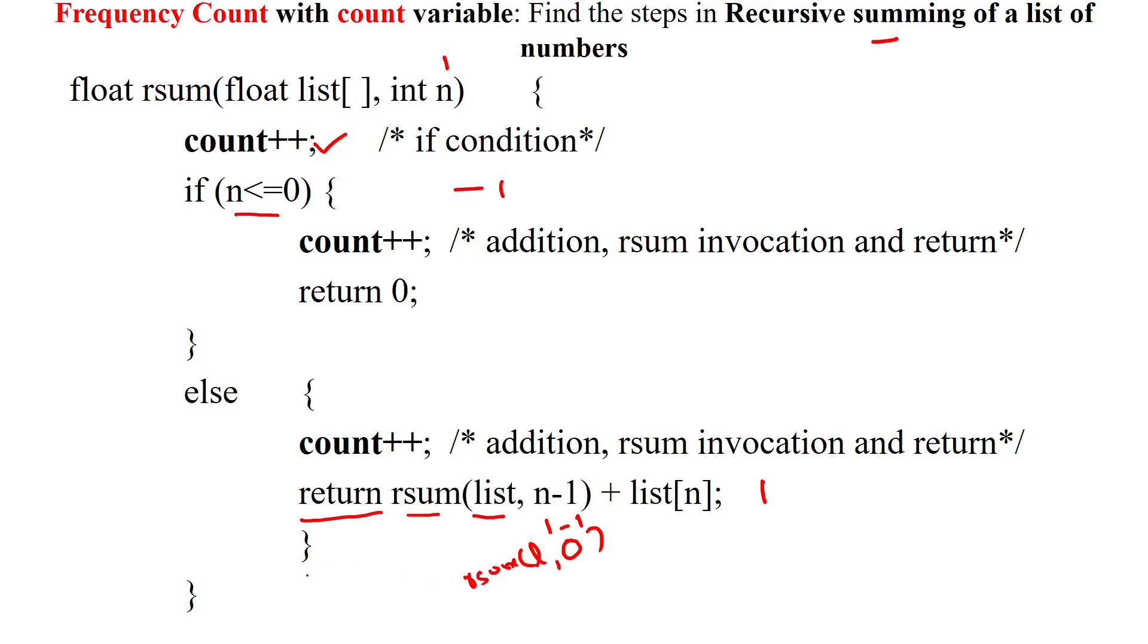So now again, the statement will go back, calling the method by itself. Again, the if condition will check. n is less than or equal to 0. Yes, now n is 0, so it is true.